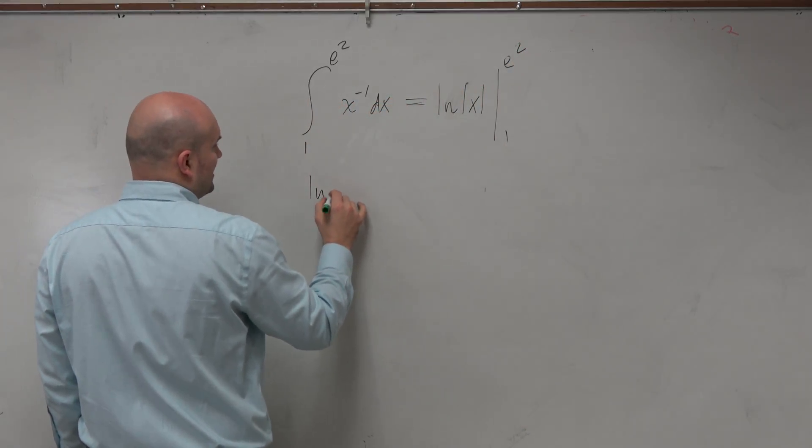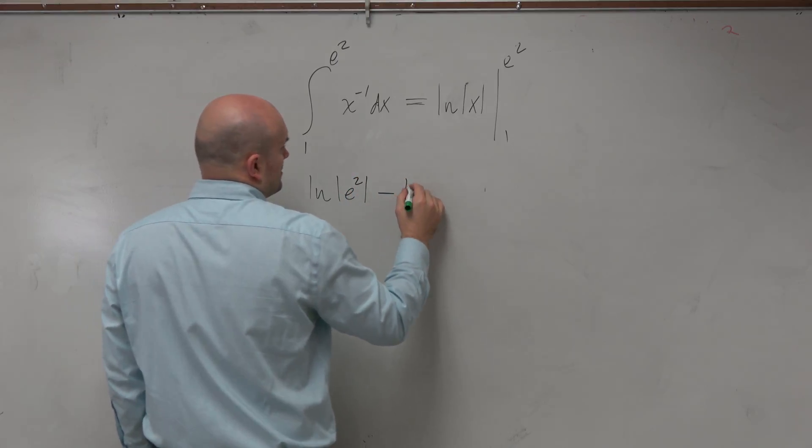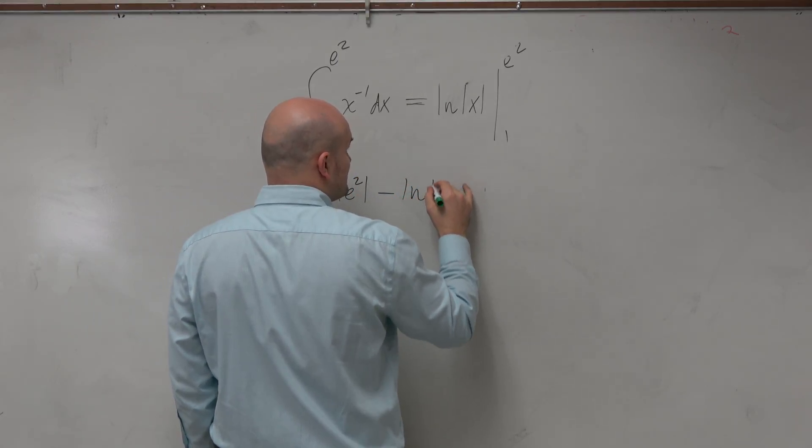And therefore, we have the ln of absolute value of e squared minus ln of absolute value of 1.